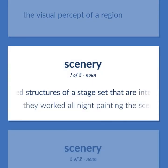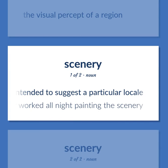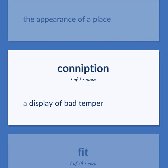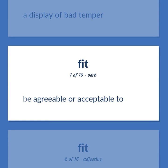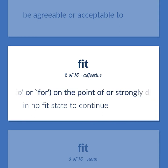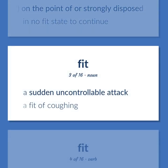Scenery: The painted structures of a stage set that are intended to suggest a particular locale. They worked all night painting the scenery. The appearance of a place. A display of bad temper. Fit: Be agreeable or acceptable to. Usually followed by 'to' or 'for,' on the point of, are strongly disposed. In no fit state to continue. A sudden uncontrollable attack. A fit of coughing.